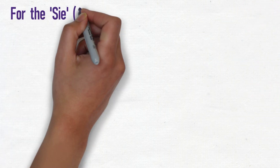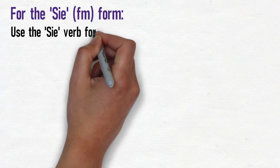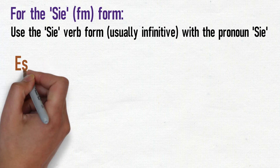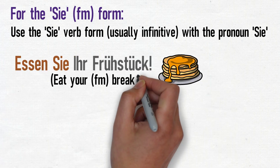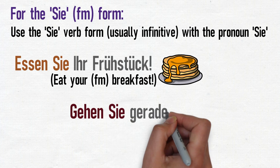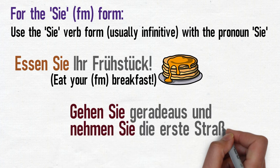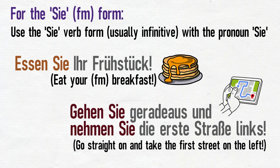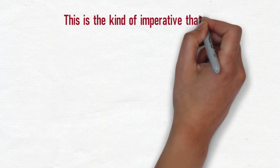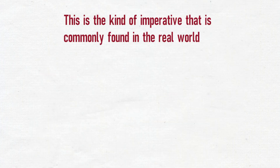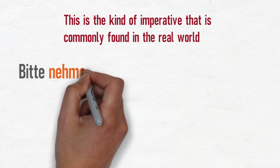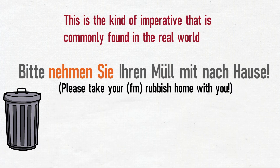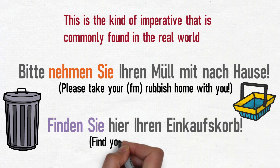For the formal Sie version of the imperative, we simply use the Sie form of the verb — which is normally the infinitive — along with the pronoun Sie. For example: Essen Sie Ihr Frühstück — Eat your breakfast. Gehen Sie geradeaus und nehmen Sie die erste Straße links — Go straight on and take the first street on the left. These are the types of examples you'll see all over the German-speaking world on signs and in shop windows. Bitte nehmen Sie Ihren Müll mit nach Hause — Please take your rubbish home with you. Finden Sie hier Ihren Einkaufskorb — Find your shopping basket here.